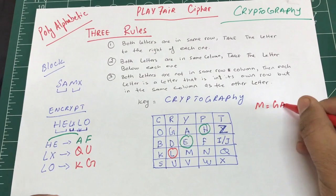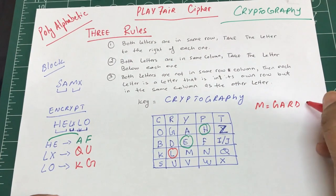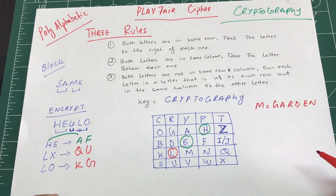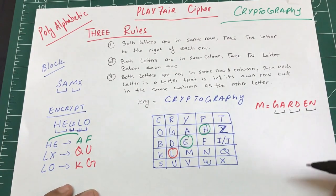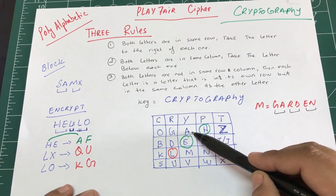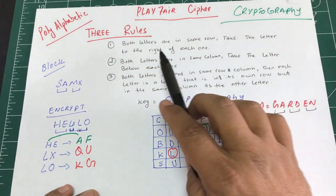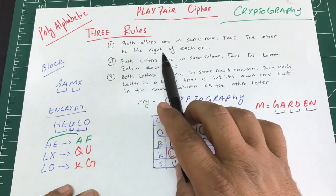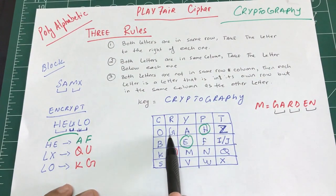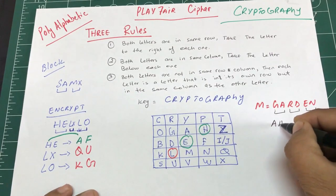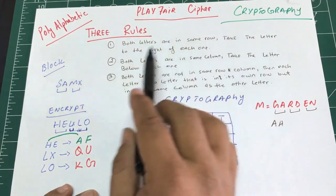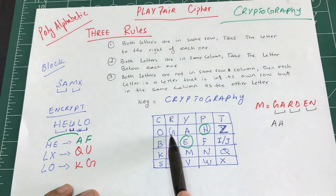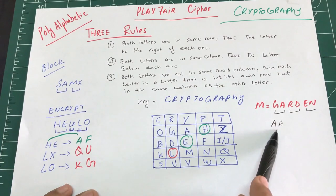Let's try another example — the word 'garden'. We make pairs: GA, RD, EN. Looking at GA: they are in the same row, so we take the letter to the right of each. The right of G is A, and the right of A is H. So GA → AH.